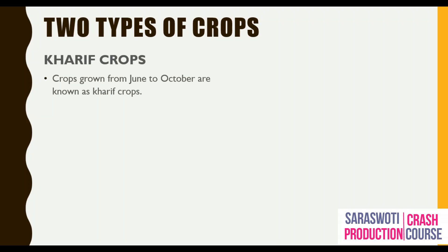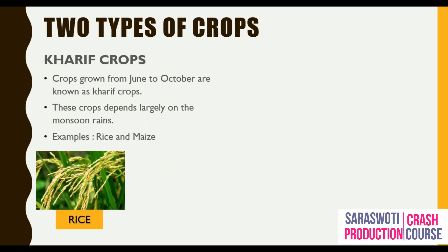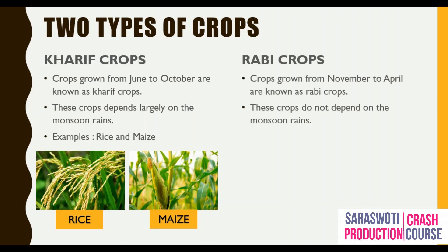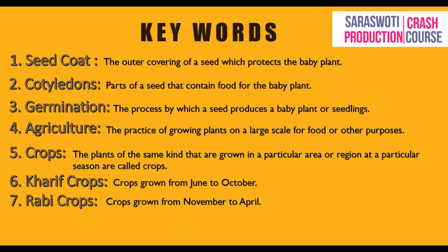Crops grown from June to October are known as Kharif crops. These crops depend largely on the monsoon rains — examples are rice and maize. Crops grown from November to April are called Rabi crops. These crops do not depend on the monsoon rains — examples are wheat and beans.